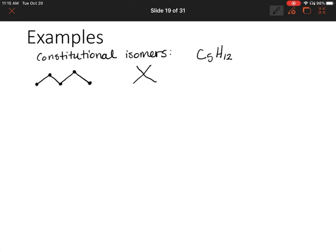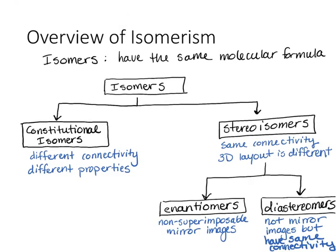Let's make sure our other constitutional isomer has the same number of hydrogens. We have three, three, three, and three — so that would be three times four, which is twelve. Again, constitutional isomers have the same molecular formula but different connectivity, and therefore they have different properties.